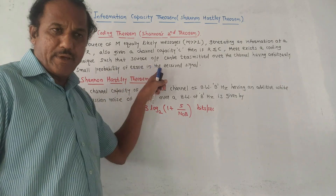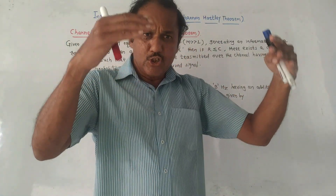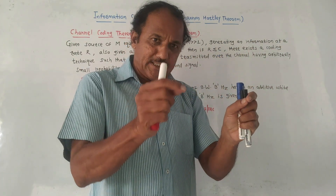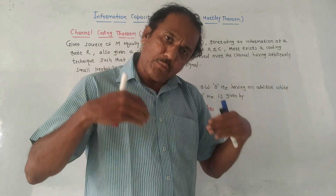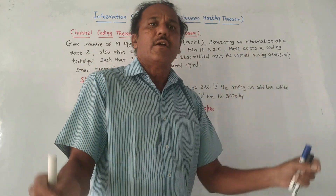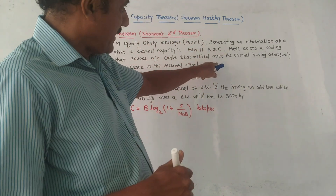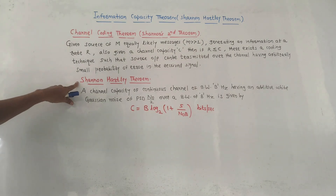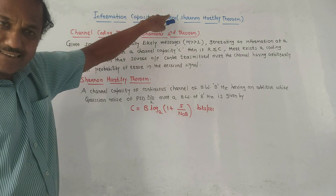In short, if we have M messages and the channel capacity is C, and the rate of transmission R is less than or equal to C, then you can fully transmit the messages with very small probability of error. Such messages can be transmitted over a channel. This is the statement of the channel coding theorem. Next is the Shannon-Hartley theorem, which is also called the information capacity theorem.